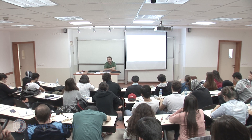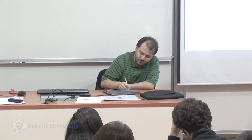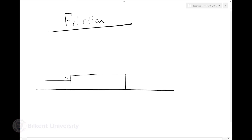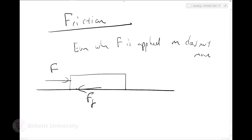Friction was the reason why Aristotle made the mistake of thinking everything wants to stop. Our first observation is that although we believe F equals ma, if I take any object and apply a force on it — like my phone here — I can feel the force, but it's not moving. There is a certain threshold until which, even when F is applied, the object does not move. There must be another force preventing the motion: the friction force.